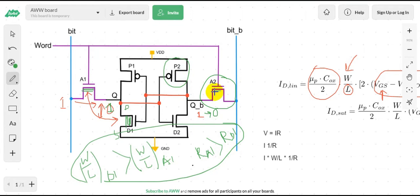We have to increase the channel size of the A2 transistor more than the P2 transistor. In this case, for write operation, bit_b is zero and Q̄ is one. To write one here, we need to make the A2 transistor stronger than the P2 transistor, because P2 is trying to keep the node Q̄ at one.